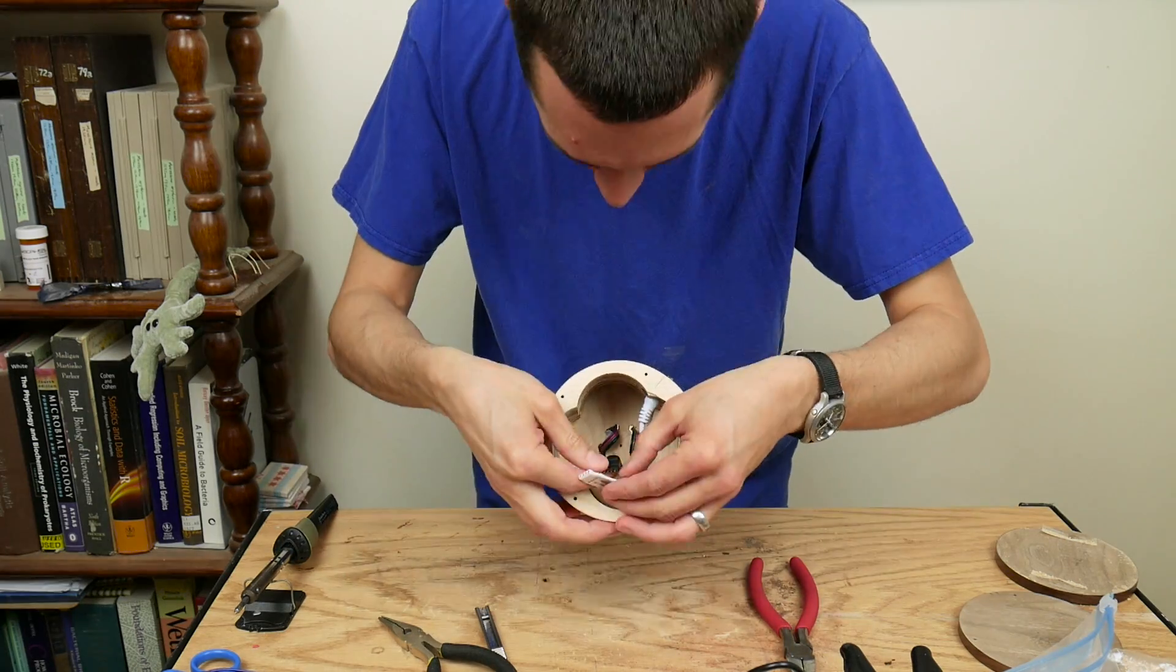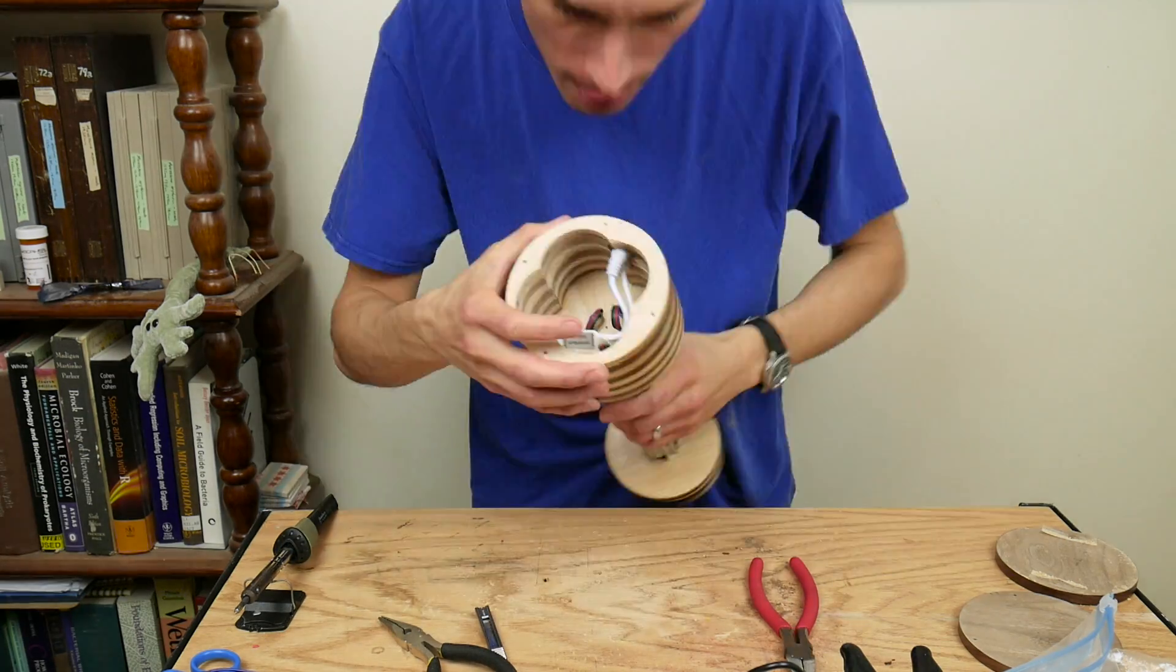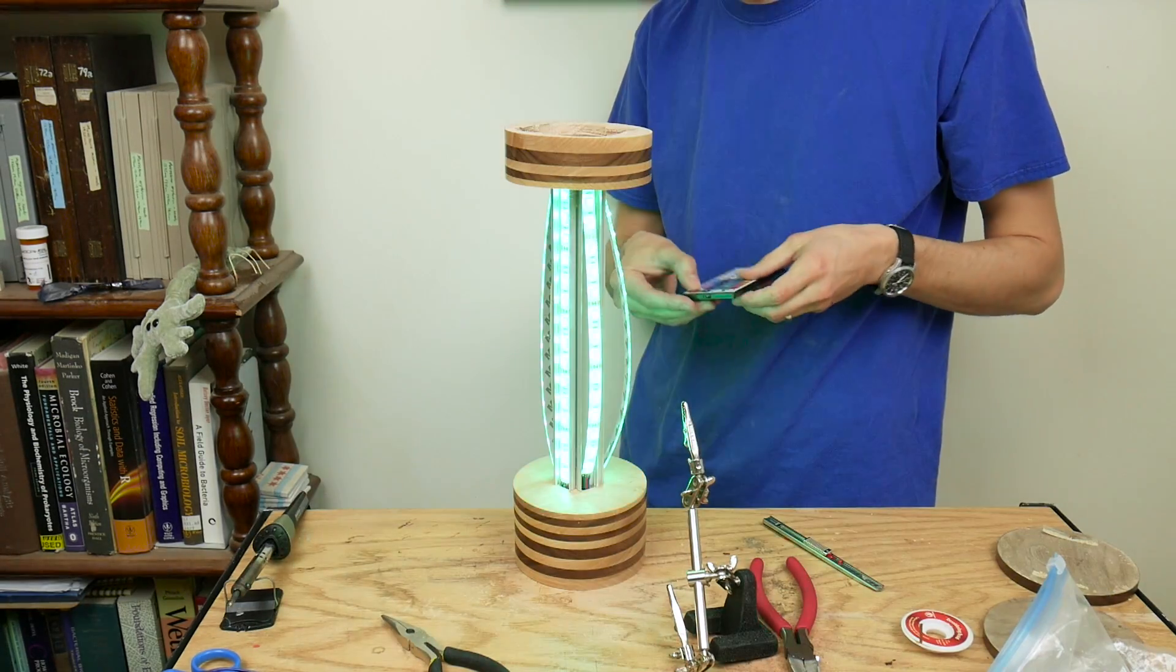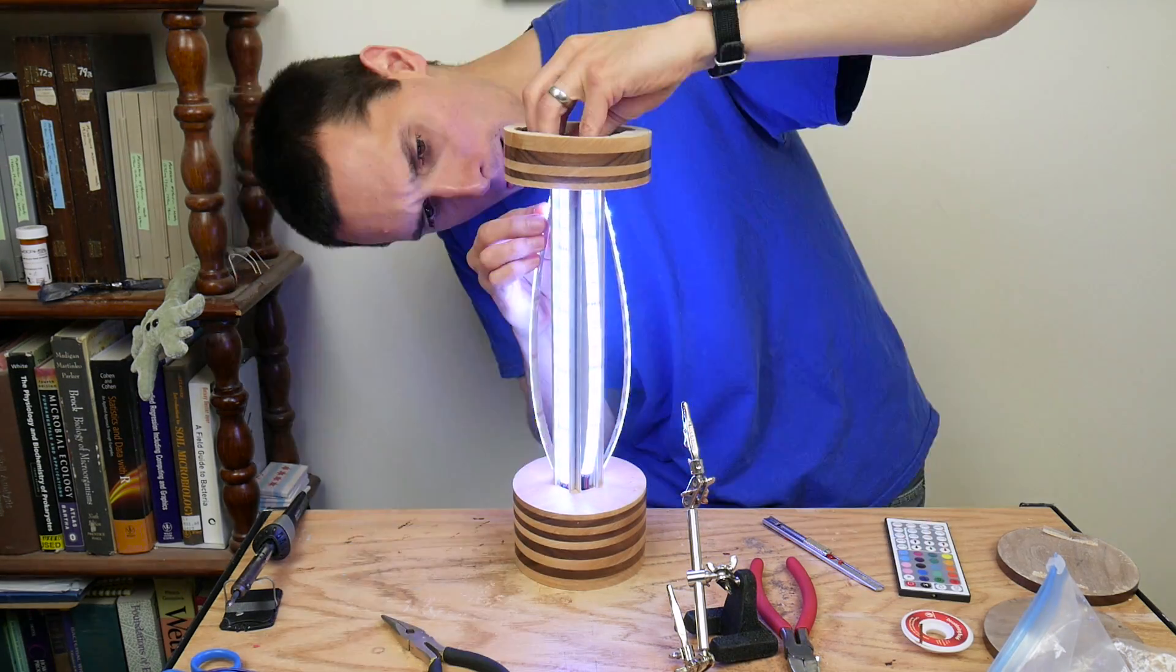Then I connected the plug to the LED controller. I plugged in the power supply and tested out the lights. After I verified that everything was working properly, I removed the backing from the LED strips and attached them to the aluminum channel.